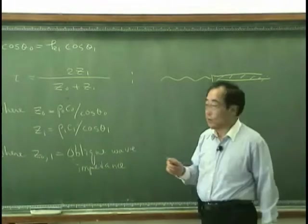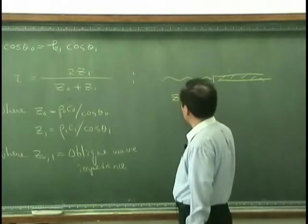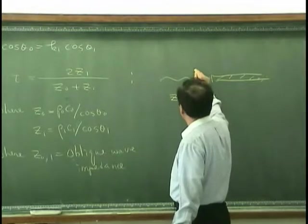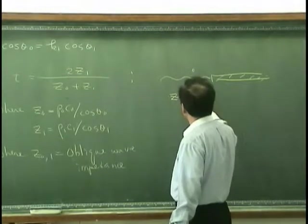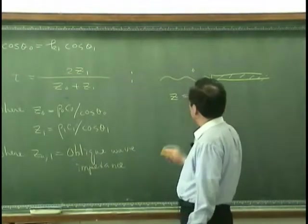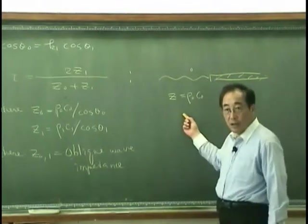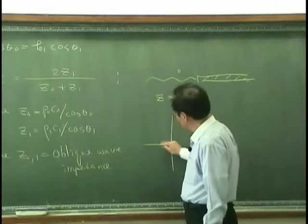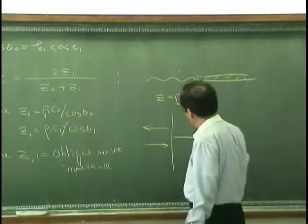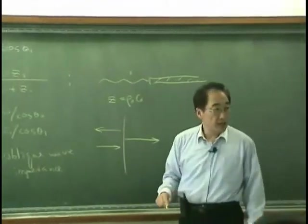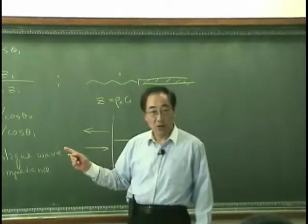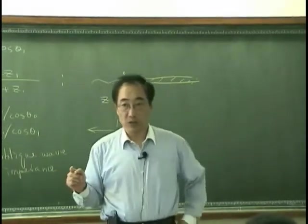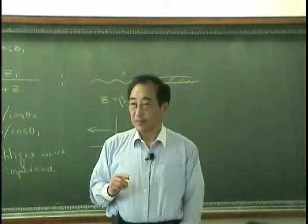The only difference is that in this case Z is rho times c. For medium zero, Z_0 is rho_0 times c_0. And for the normal incidence case, Z_0 is simply rho_0 c_0 and Z_1 is rho_1 c_1.